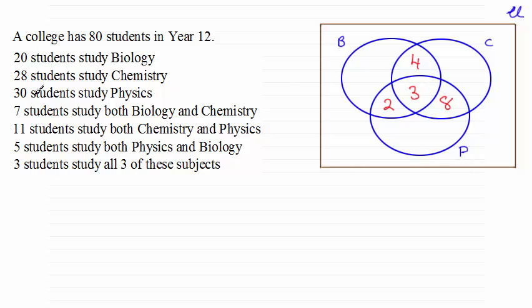Now we can come back to 30 students study physics. That's the two, the three, the eight, and this region in here. So what we've got then is a total of five here. Two and three is five and the eight is 13. And so 13 away from 30 just leaves us with 17.